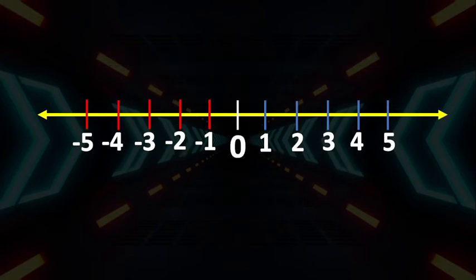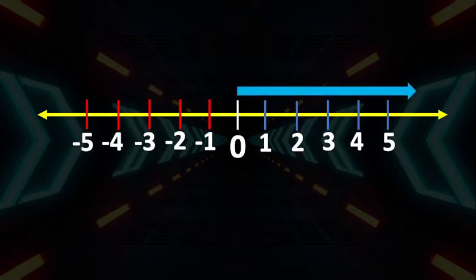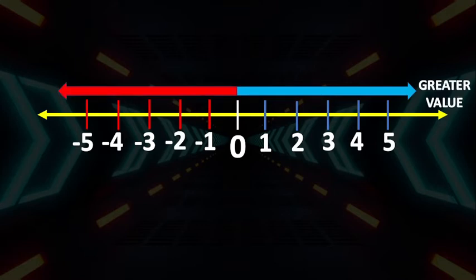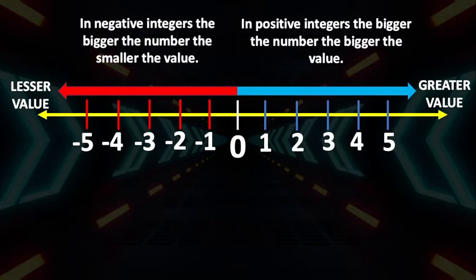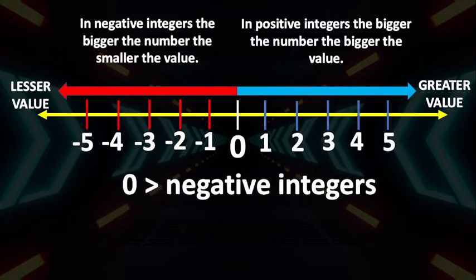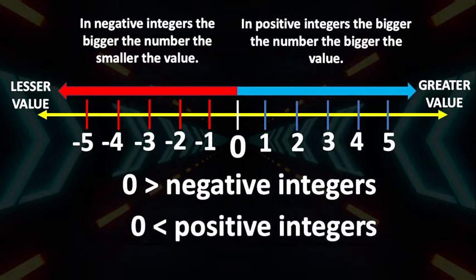Now, let's learn how to compare integers. In comparing integers, we need to understand that the numbers to the right of 0 become bigger and bigger — the farther the number from 0, the greater its value. While the numbers to the left side of 0, which are negative integers, become smaller and smaller — the farther the number from 0, the lesser the value. Therefore, in positive integers, the bigger the number, the bigger the value. The value of 0 is always greater than any negative integer and less than positive integers.